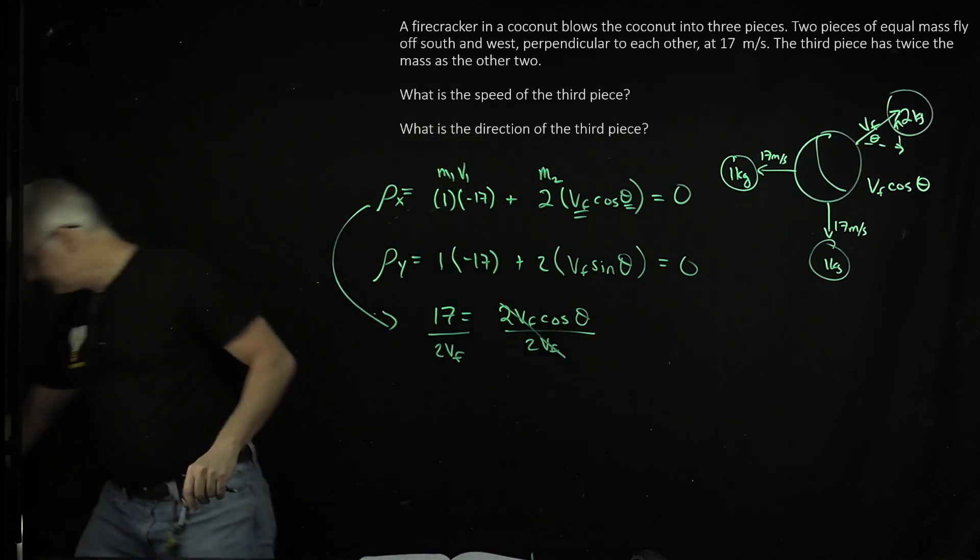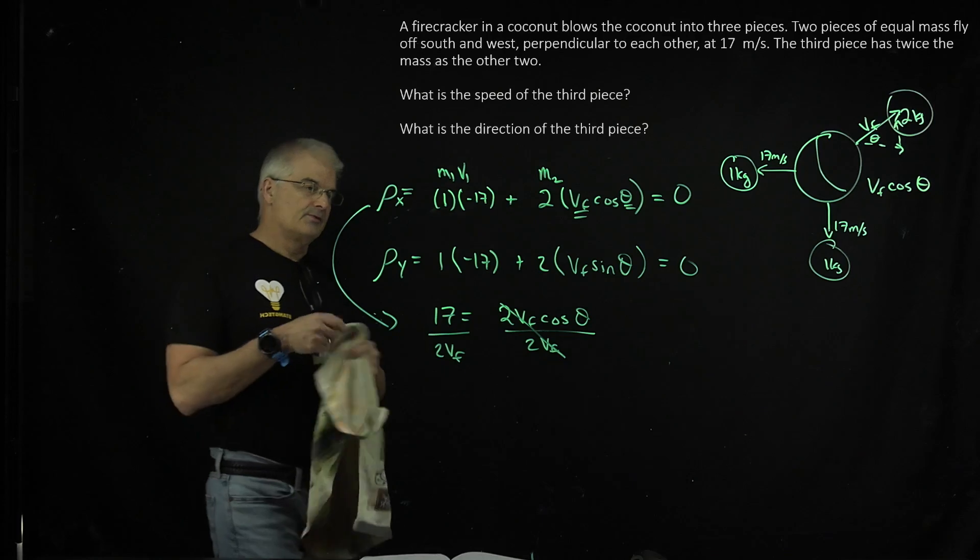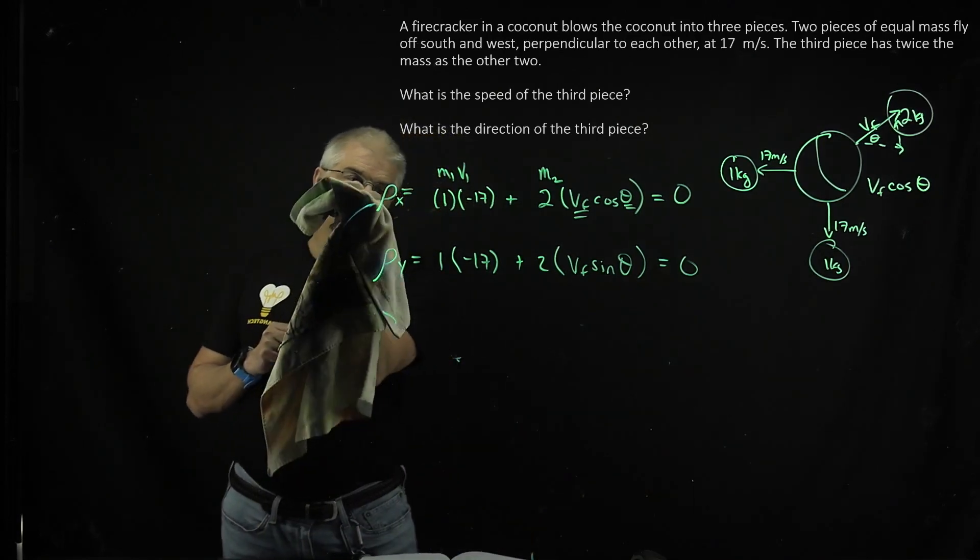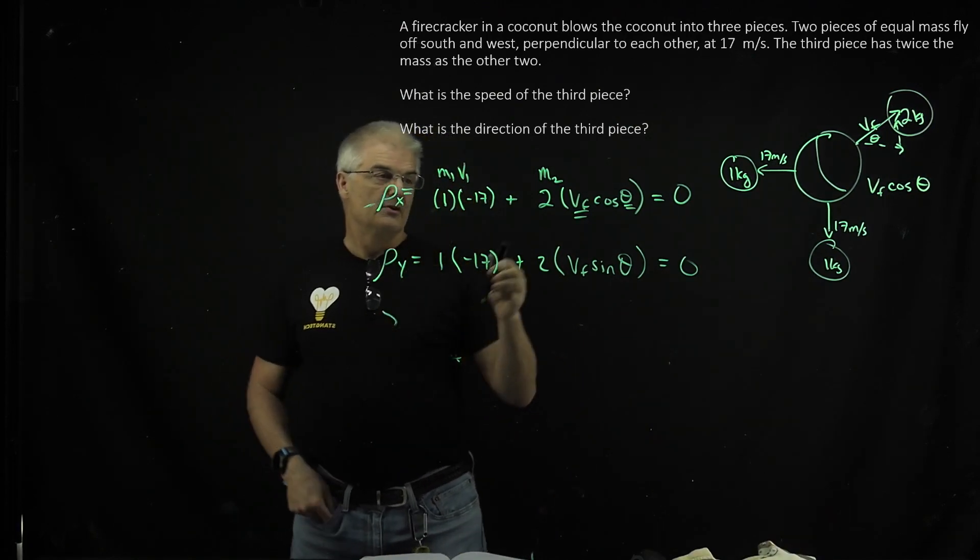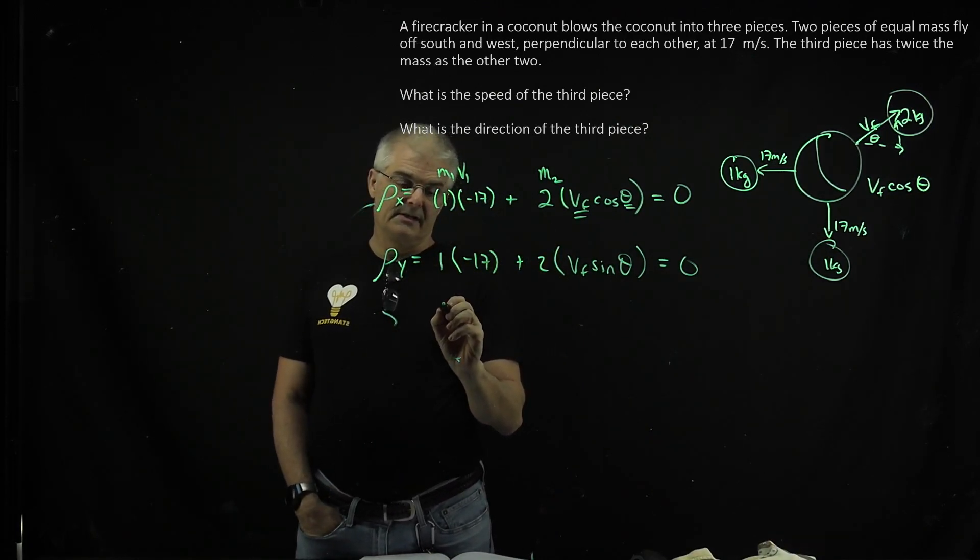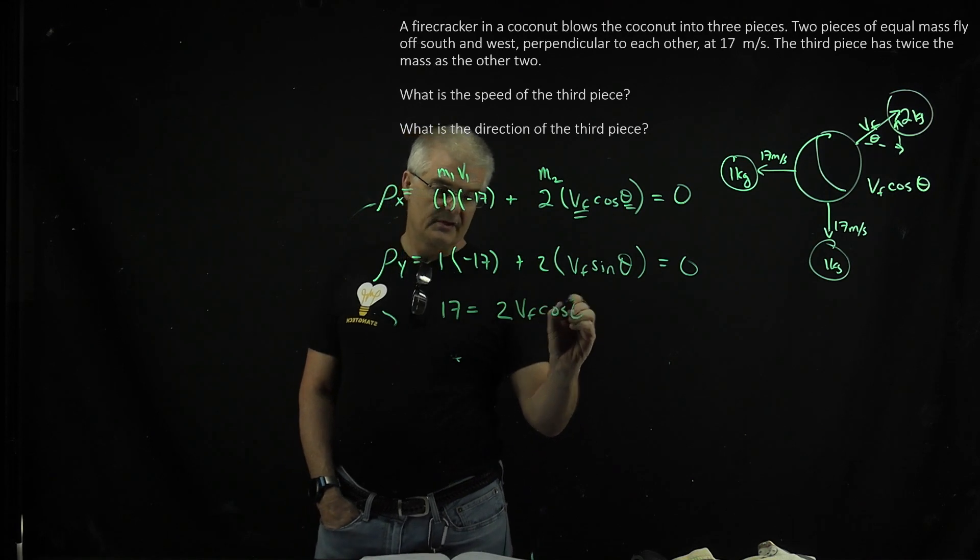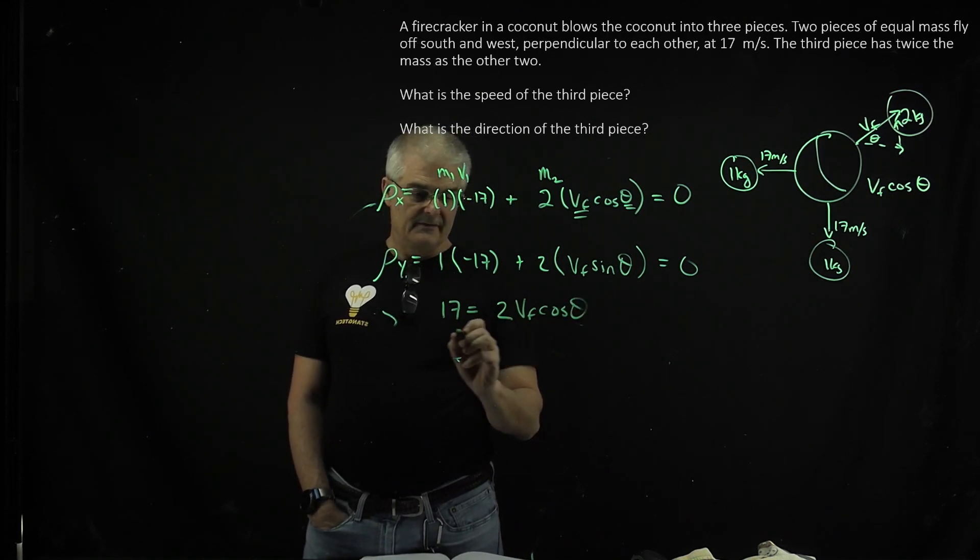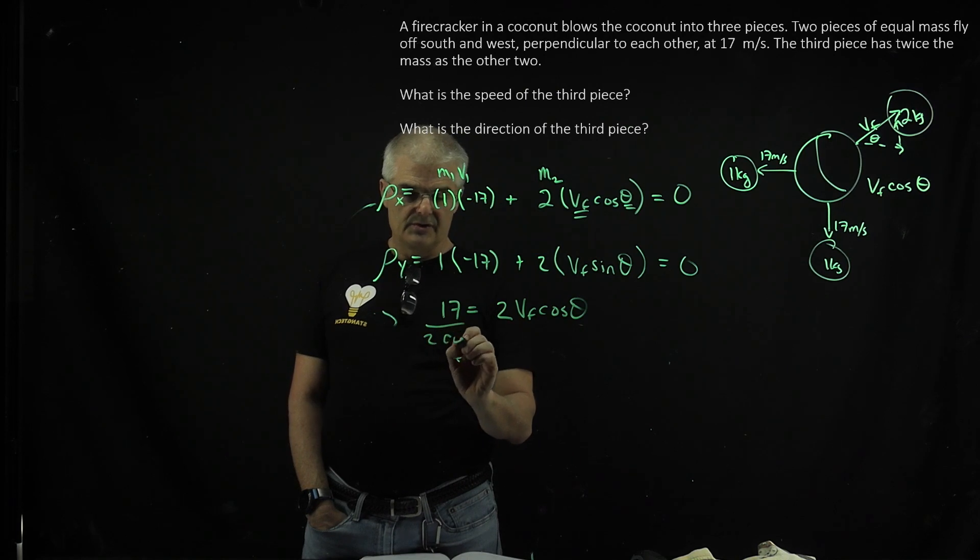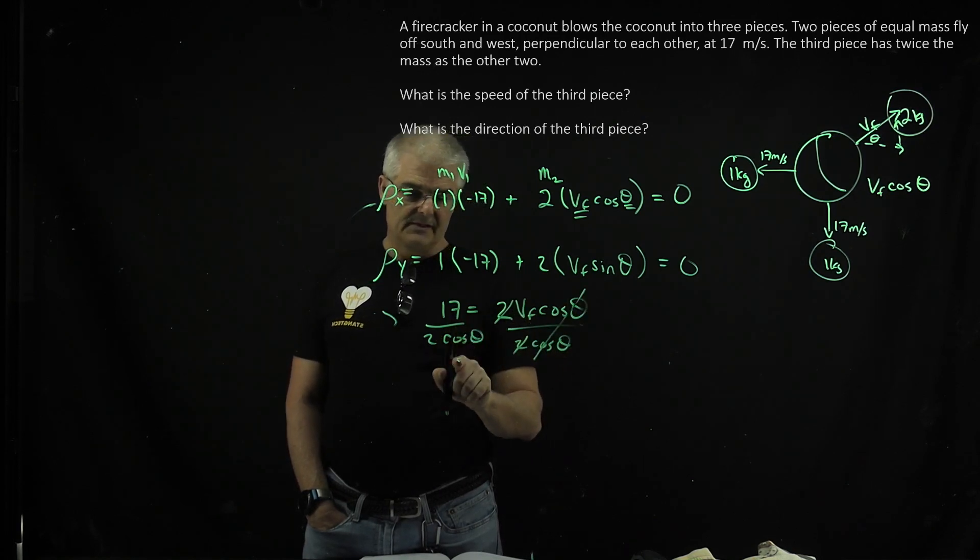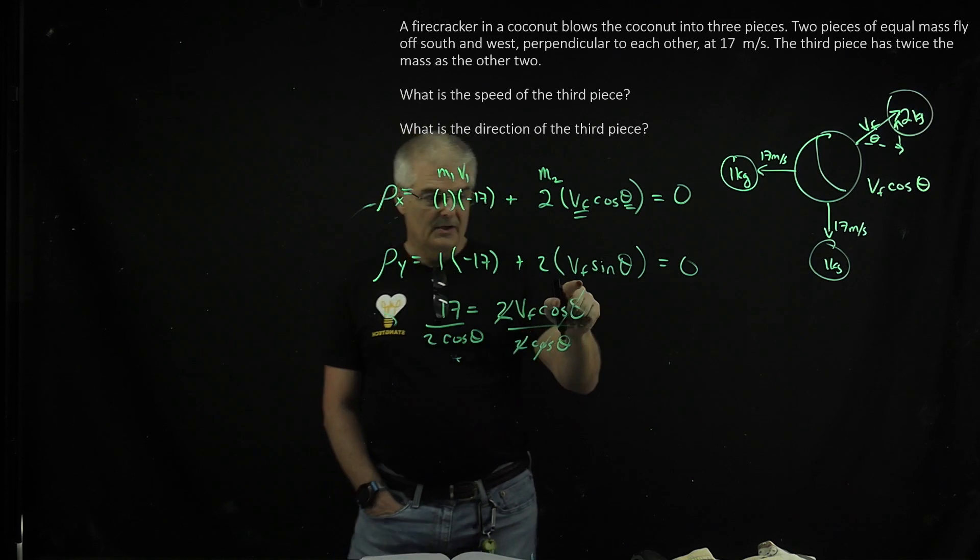All right, sorry guys, I wouldn't do it that way, because cos theta and sine theta aren't the same thing. So let's solve for vf. So I can still say 17 equals two vf cos theta. So if I want to solve for vf, I divide both sides by two cos theta. Two cancels, two cos theta. So vf is 17 over two cos theta.